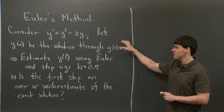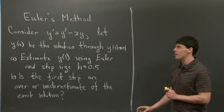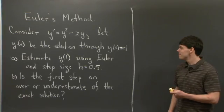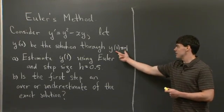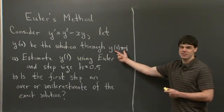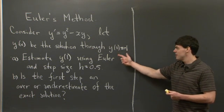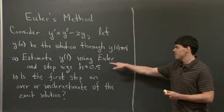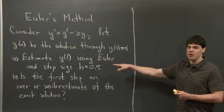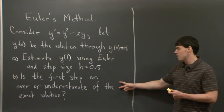And the problem we're interested in considering today is the ODE y' = y² - xy. And we're interested in integrating the solution that starts at y(0) = -1 using a step size of 0.5. And we want to integrate it to y(1). And then for the second part,